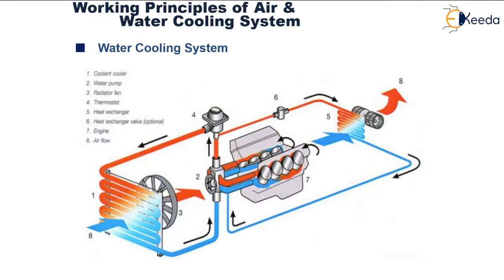The next component is the heat exchanger. As the coolant flows around the engine through the water jackets, it takes away heat, and this heat is then transferred away in the heat exchanger. Another optional heat exchanger with a valve may also be used. Component 7 is the engine itself, and 8 shows the direction of air flow.